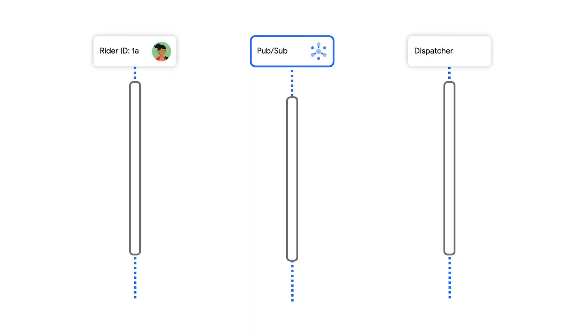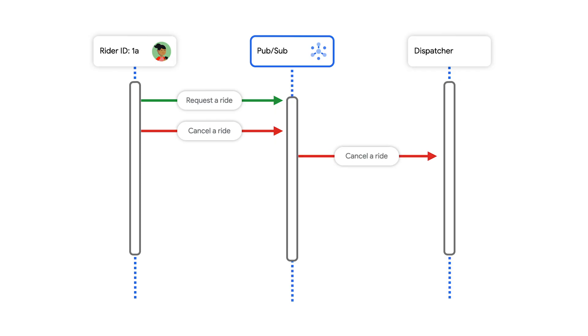The second issue I have is mistakenly sending cars to pick up a rider who has cancelled. First, the rider sends a request ride message. Next, the rider sends a cancelled ride message if they want to cancel. For some reason, the cancelled ride message sometimes arrives first. When it does, the dispatcher doesn't know about this ride yet, so it can't cancel it. Then later the request ride message comes in and the dispatcher creates the ride and finds a driver for this cancelled ride. This sounds like messages were definitely arriving out of order.